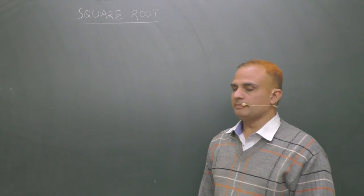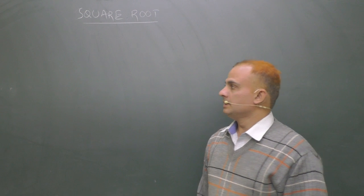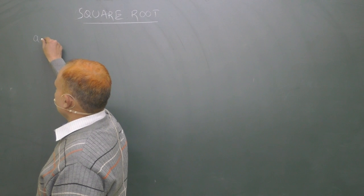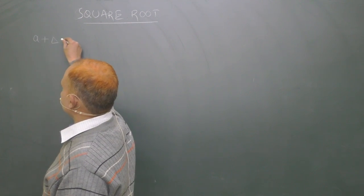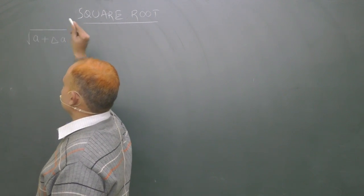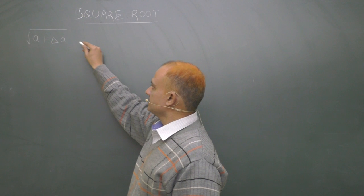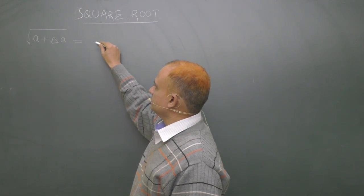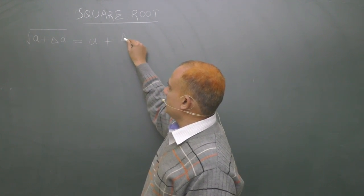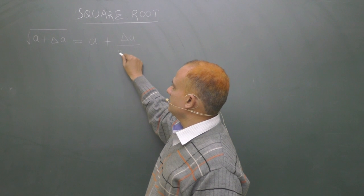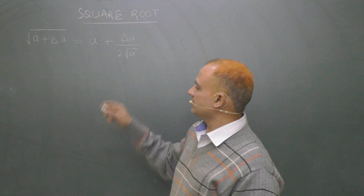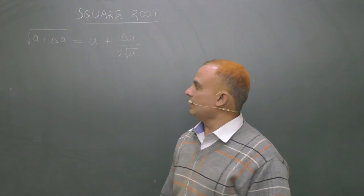So I have come up with a very good technique. You can see here the technique is: square root of a plus delta a is equal to a plus delta a upon 2 root a. This is the technique. Now I explain to you how to use it.